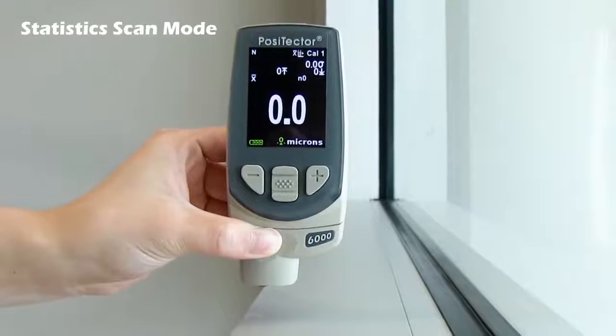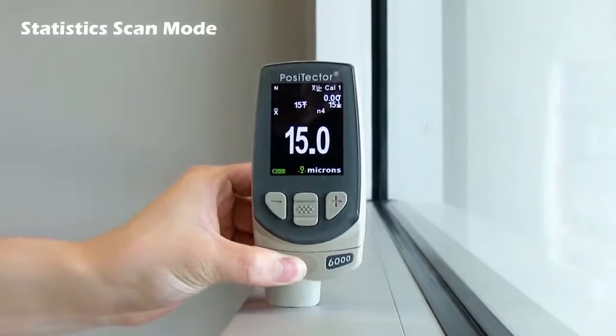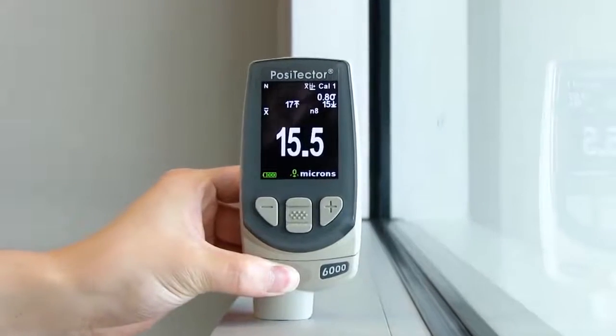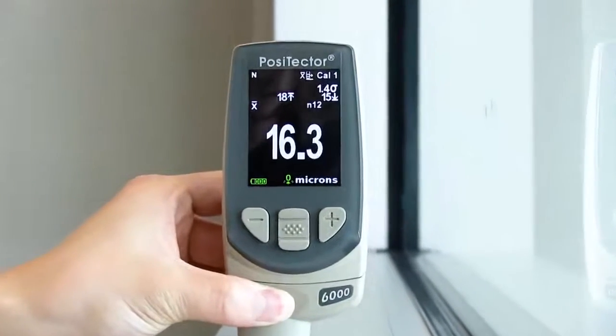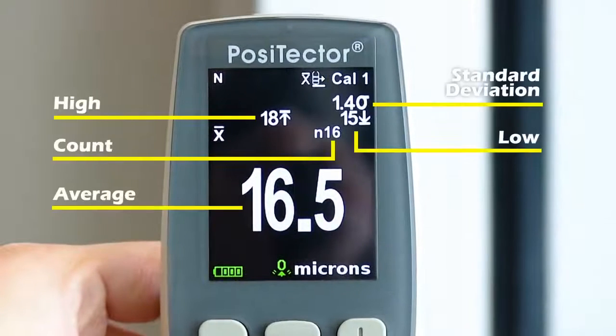In statistics scan mode, a running average is displayed on the screen while taking readings, in addition to the minimum, maximum, and standard deviation values. When memory mode is enabled, these five parameters are saved after each scan without saving the individual readings.